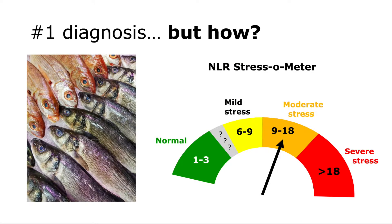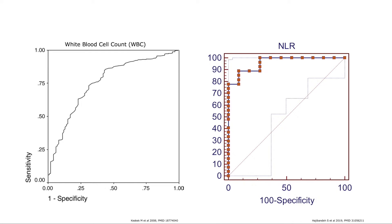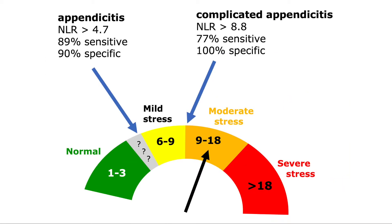NLR can be used as a diagnostic test, but only among a fairly homogeneous group of patients with a limited number of diagnoses. For example, imagine patients presenting with right lower quadrant pain. High levels of stress suggest a severe underlying problem — in this case, appendicitis. NLR outperforms white blood cell count for the diagnosis of appendicitis. An NLR over 5 suggests appendicitis, whereas an NLR over 9 suggests complicated appendicitis.